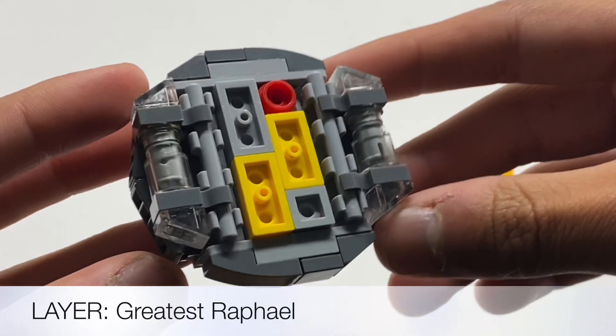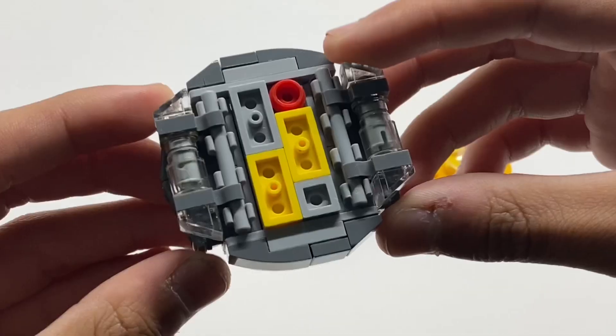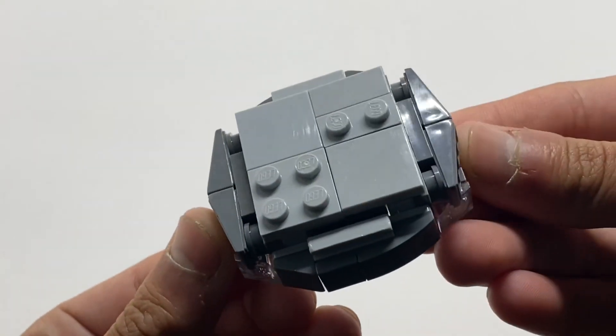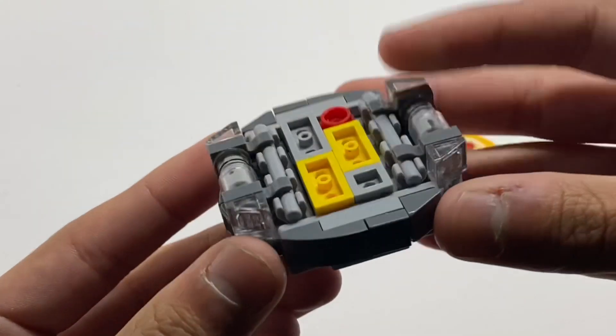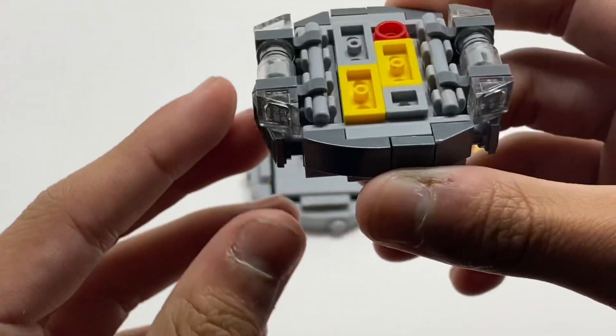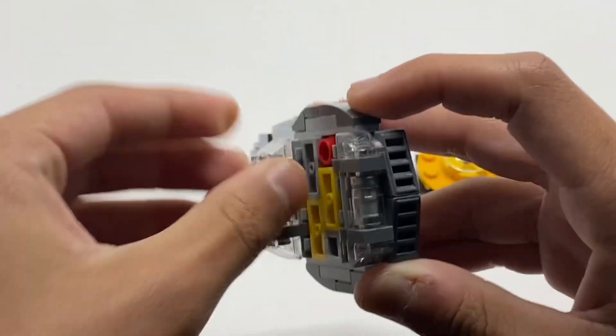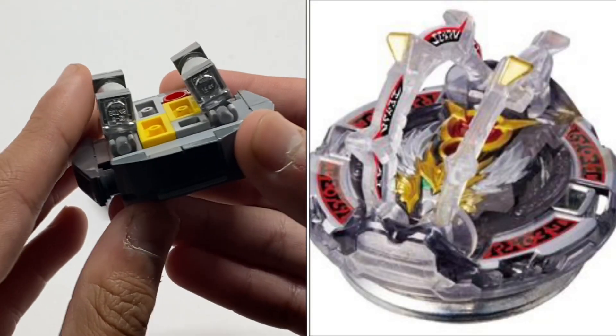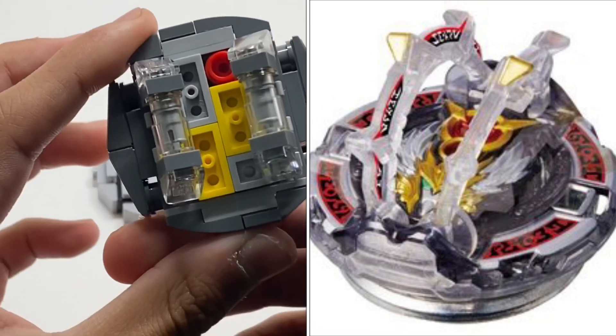We'll start off with the layer, which is Greatest Raphael. It does not have any armor or DB core, but to replace that is a very cool gimmick, in which when you launch it hard, these two sides right here move up like so, making a rounder shape.